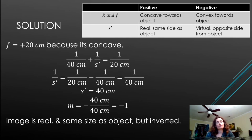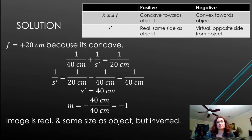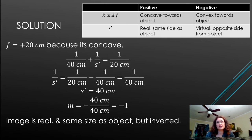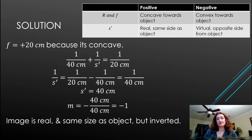Since it's a concave mirror, the focal length is positive: f = +20 cm. Plugging into the mirror equation: 1/40 + 1/s′ = 1/20. Solving: 1/s′ = 1/20 − 1/40 = 1/40, so s′ = 40 cm.